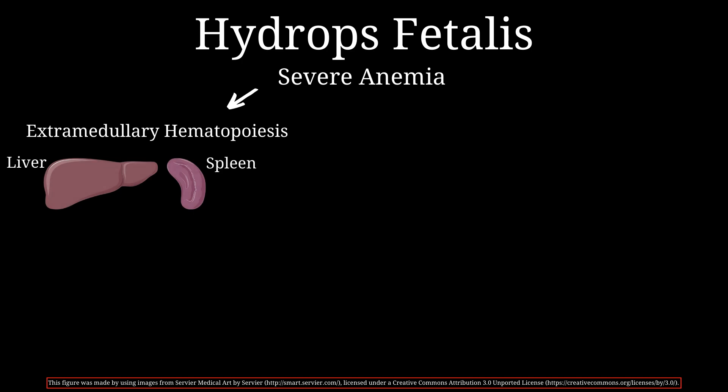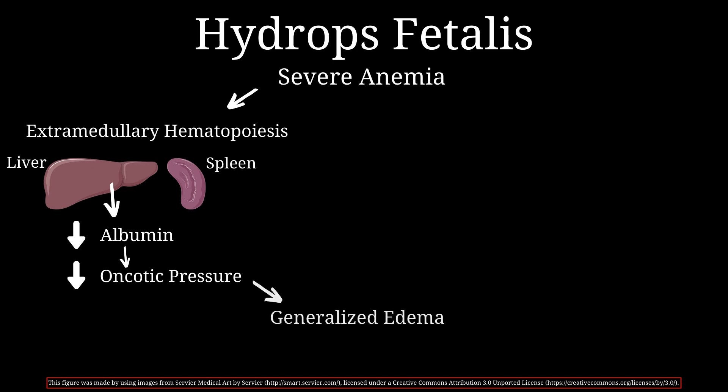As a result, the normal functions of the liver are impaired, such as producing albumin — a protein responsible for maintaining oncotic pressure and keeping fluid inside the blood vessels. Low albumin levels can decrease the total oncotic pressure, causing fluid to leak out of the blood vessels and accumulate in the tissues, resulting in generalized edema.